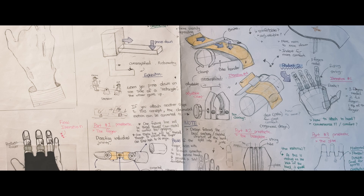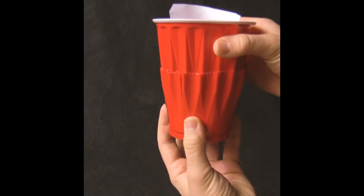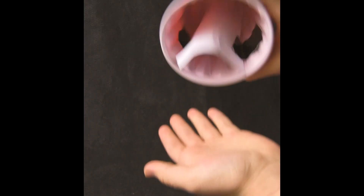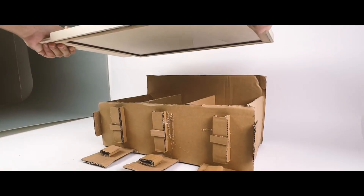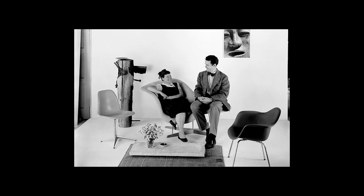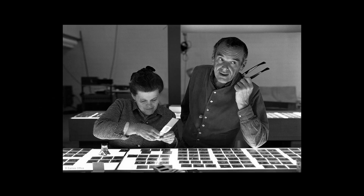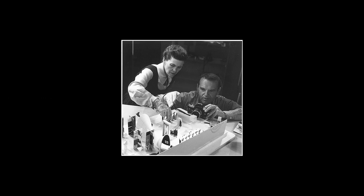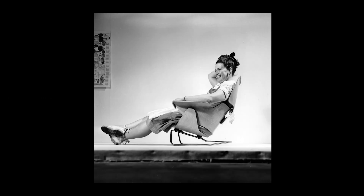There are countless ways to approach the concept development stage of the design process, and we highly recommend that you work to your strengths. If you excel in product sketching, lean into drawing to explore your ideas. If hand modelling is your thing, spend more time experimenting with cardboard or clay. A great example of this is Charles and Ray Eames, who often prioritised photography and model making over traditional illustrations when designing their iconic furniture pieces. If you're working in a team, take the time to understand everyone's strengths and figure out how to make the most of them.